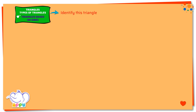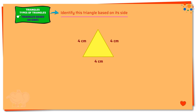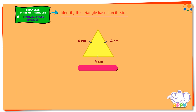Identify this triangle based on its side. In this triangle, we see that all the three sides are equal. So this triangle is an equilateral triangle.